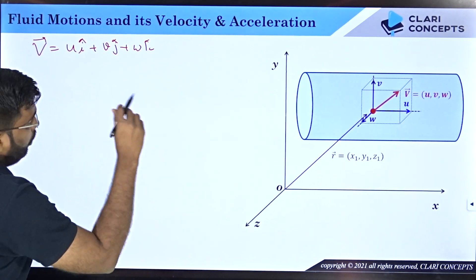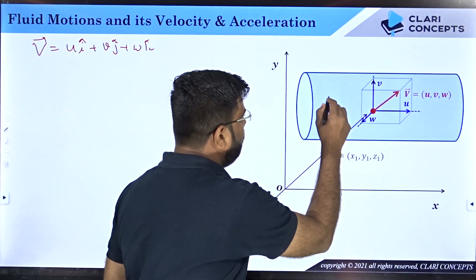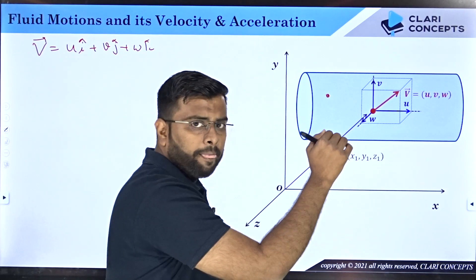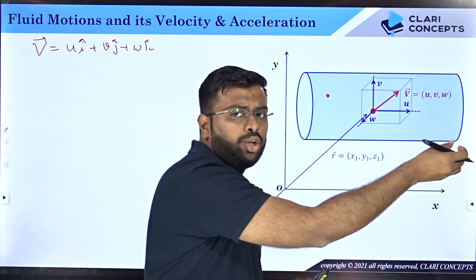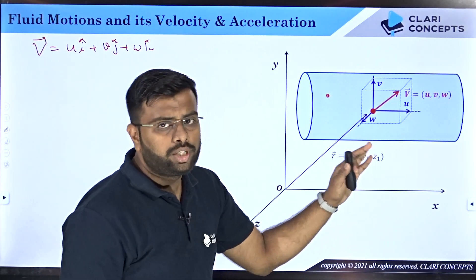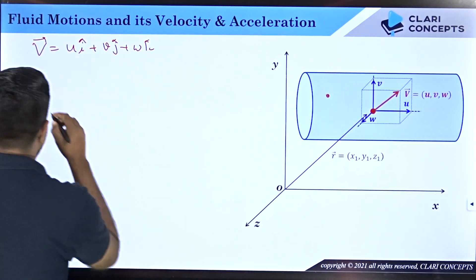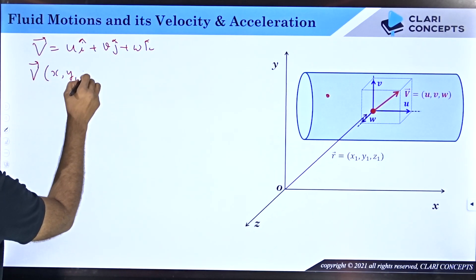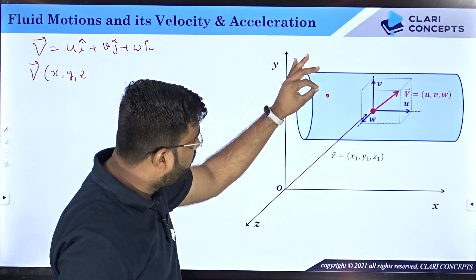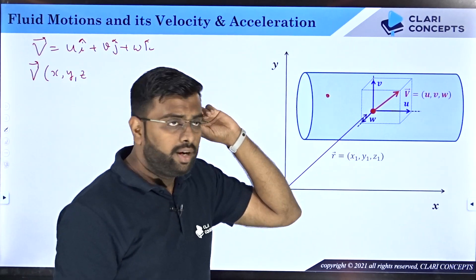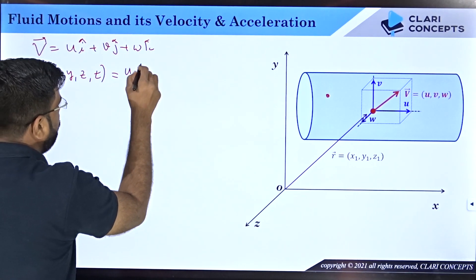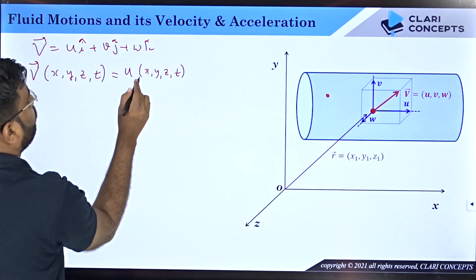If you take a different point — say x2, y2, z2 — or even the same location at a different instant of time t2, the molecules will be different and velocity will also be different. So velocity is a function of x, y, z, and also time t. In general, u, v, and w are inherently functions of x, y, z, and t.